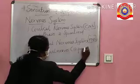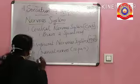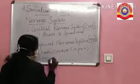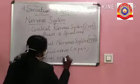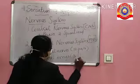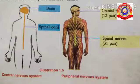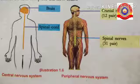Once again: the nervous system is classified into CNS and PNS. The CNS contains the brain and spinal cord. The PNS consists of cranial nerves with 12 pairs and spinal nerves with 31 pairs.